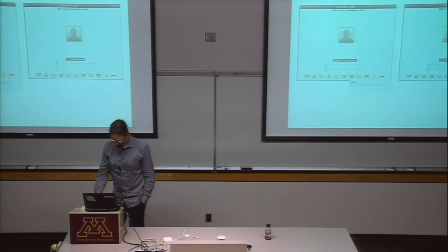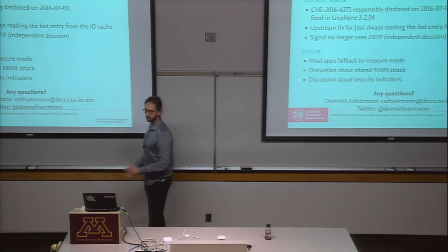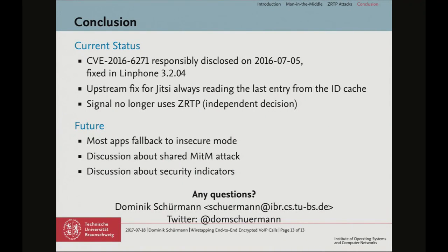So that's it — my conclusion. Linphone has been fixed. The bug in Jitsi we fixed directly upstream. Signal no longer uses ZRTP; this was an independent decision by Moxie and was not influenced by our research. For the future: most apps fall back to insecure mode if ZRTP fails, and given the confusing security indicators, I don't think users will notice. The shared man-in-the-middle attack still needs to be discussed. Thanks.